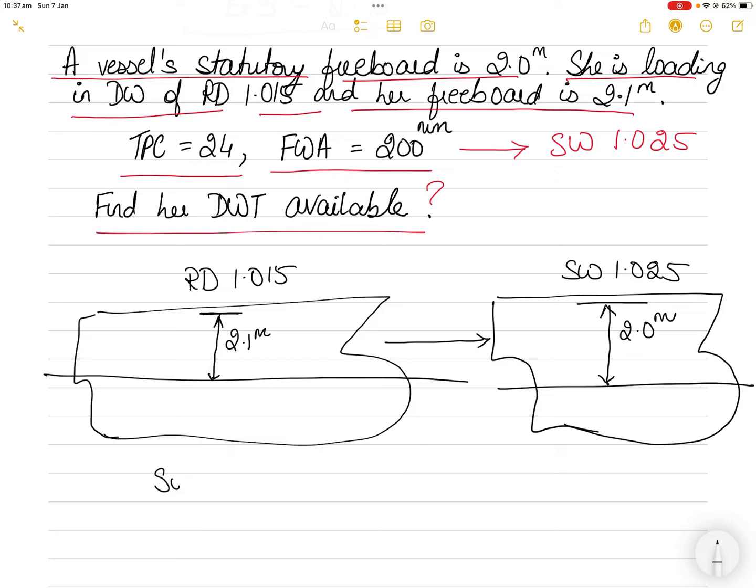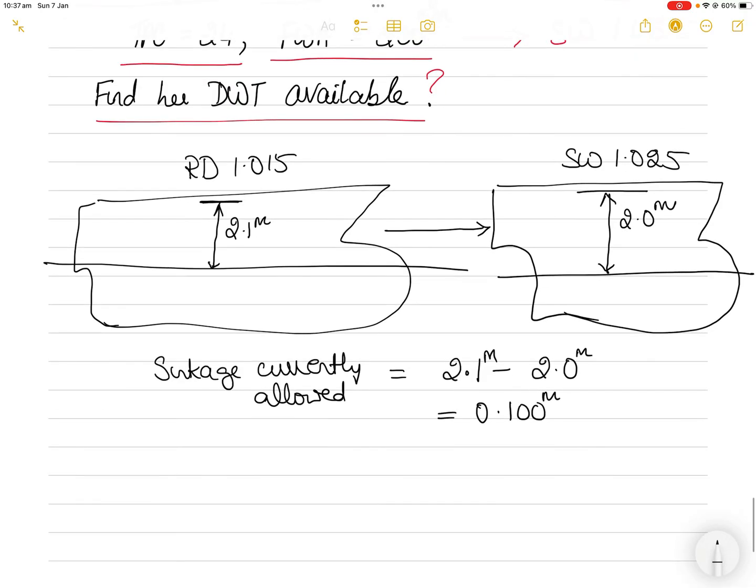This means you have a higher freeboard in dock water, so you can sink the vessel and reduce the freeboard to 2 meters. So 2.1 meters minus 2 meters is 0.100 meters. To convert this into centimeters, multiply by 100, which equals 10 centimeters.